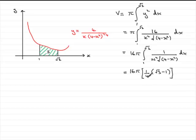So all I need to do is cancel out the 4 into the 16. 4 into 4 goes 1. 4 into 16, 4. So what we end up with then is 4 pi multiplied by root 3 minus 1.